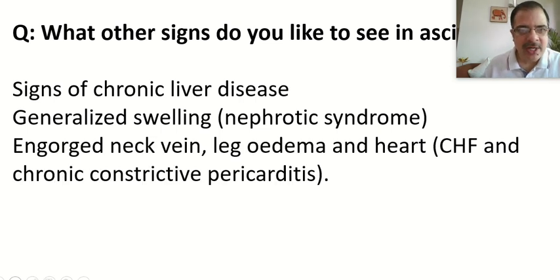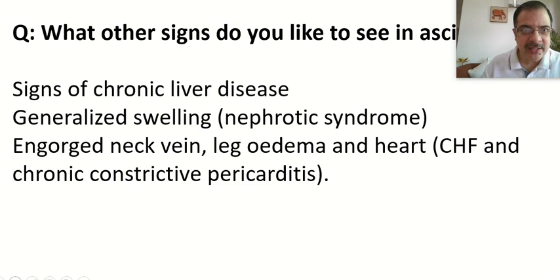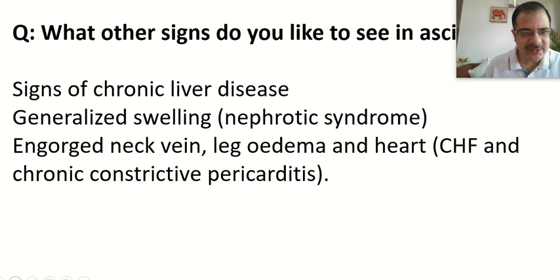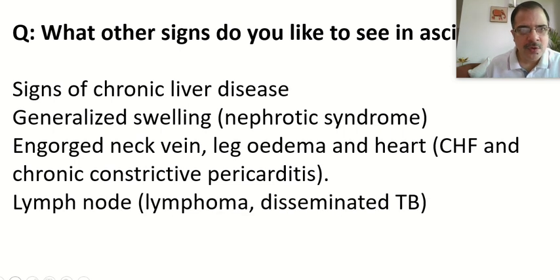We look for engorged neck veins — raised JVP. We auscultate the heart for abnormal sounds: S3 in CHF, or pericardial knock in constrictive pericarditis, both of which can lead to ascites. We also look for lymphadenopathy, seen in lymphomas or disseminated tuberculosis.